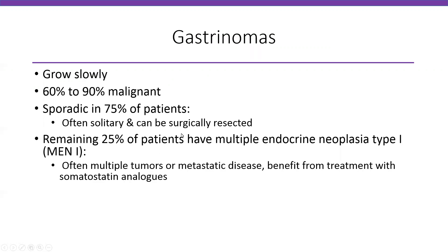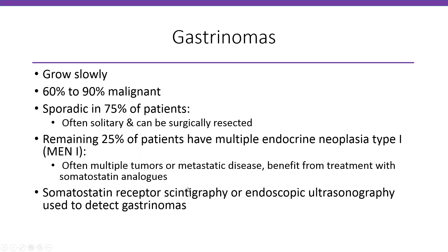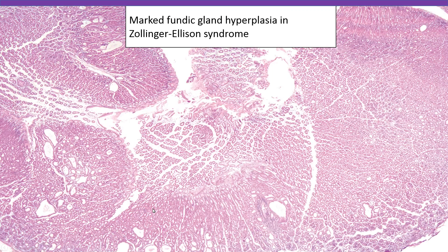In 25% of patients, you can have multiple gastrinomas or gastrin-producing tumors, and these patients can have multiple endocrine neoplasia type 1, or MEN1 syndrome. These patients often have multiple gastrinomas and can have metastatic disease, so they often benefit from treatment with somatostatin analogs. To detect these gastrinomas, we can use somatostatin receptor scintigraphy or endoscopic ultrasound. Most of these gastrinomas are located in the duodenum or pancreas. In the stomach, what we see is marked gastric fundic gland hyperplasia with a five-fold increase in thickness of the fundic glands.